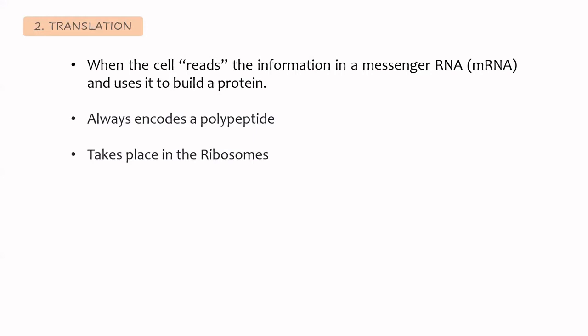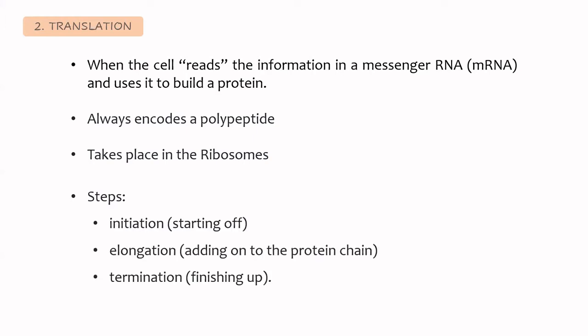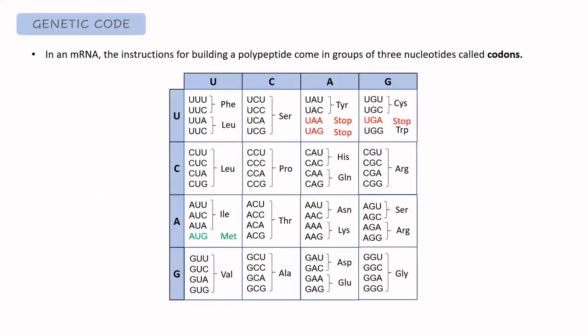This process takes place in the ribosome and is also composed of different steps: initiation, elongation, and termination. Before going into the process, I want to talk about the genetic code, because the ribosome reads the sequence of the messenger RNA in groups of three nucleotide bases called codons. Since we have four bases we have many more codon combinations than there are amino acids, so it is normal that one amino acid can be encoded by different codons.